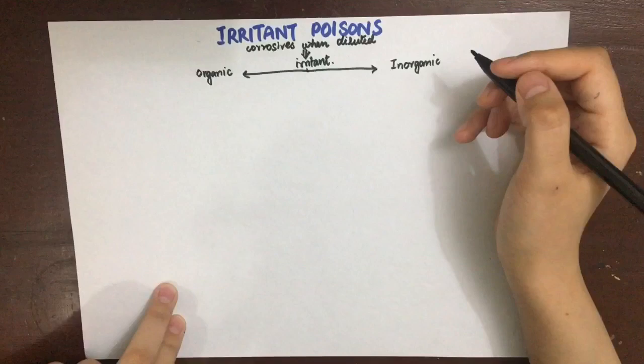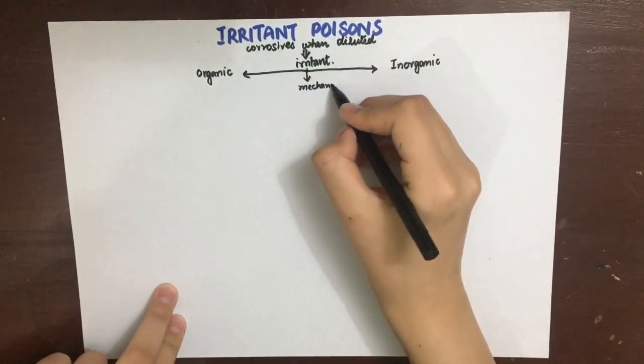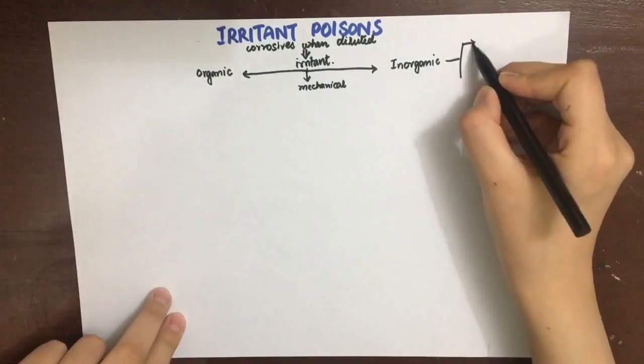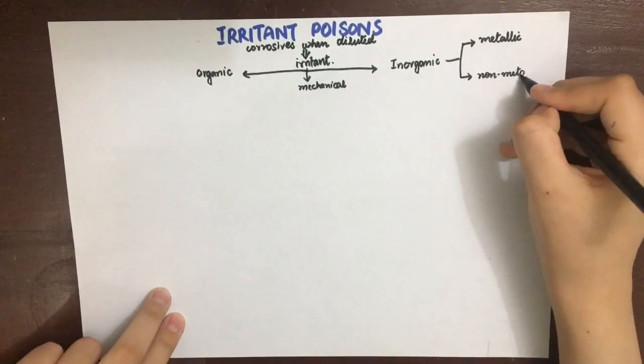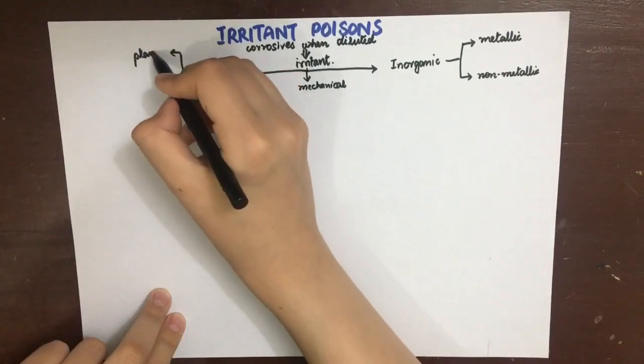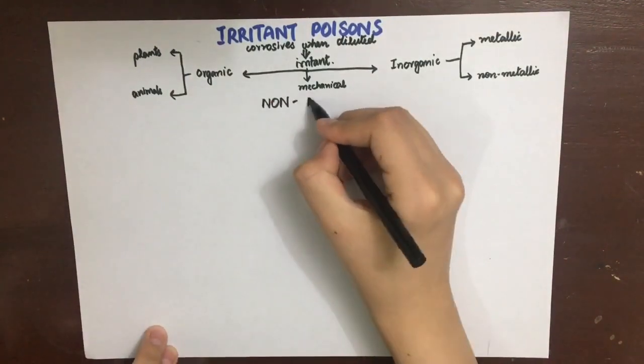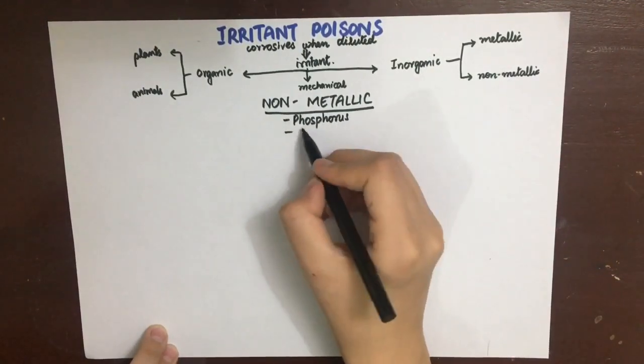Irritant poisons are classified into organic and inorganic poisons and mechanical poisons. The inorganic poisons are further classified into metallic and non-metallic poisons, while the organic poisons are derived from living things, further classified into plants (vegetables) and animal poisons.